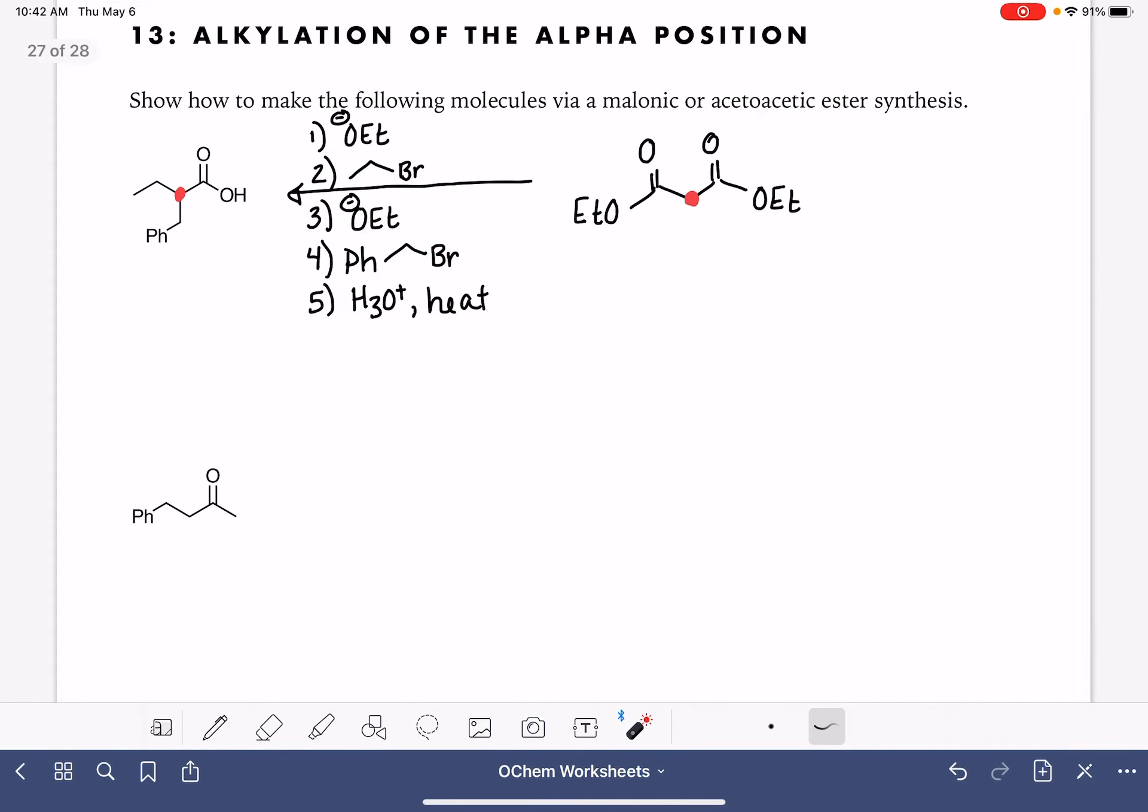For making a ketone, we use the acetoacetic ester synthesis. In that process, we start the reaction every single time with acetoacetic ester, which is this molecule right here. And in acetoacetic ester, the alpha carbon is this carbon right here. So this portion of the molecule comes from the original.